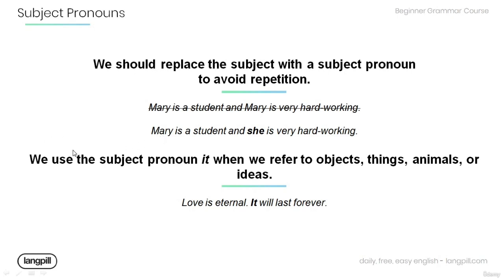Note that we use the subject pronoun 'it' when we refer to objects, things, animals, or ideas. For example: 'Love is eternal — it will last forever.' The pronoun 'it' refers to the word 'love.'